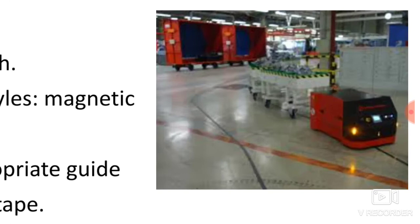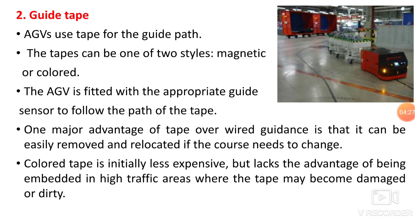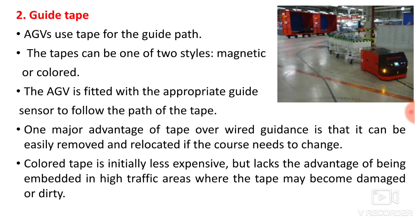The second technique is guide tape. Here you can see guide tapes stuck over the shop floor. AGV uses tape for the guide path. The tape can be of two styles: magnetic or colored. The AGV is fitted with an appropriate guide sensor to follow the path of the tape — an optical sensor that senses the tape on the shop floor and follows it.